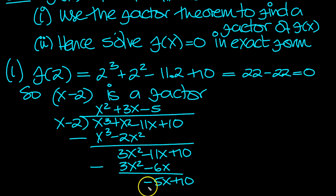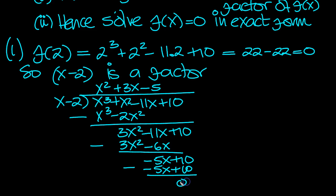How many of these go into this? It's minus 5. So minus 5 times x is minus 5x, and then minus 5 times minus 2 is plus 10. Take them away from each other and they both cancel each other out. We're left with 0. So that's what it goes into then.